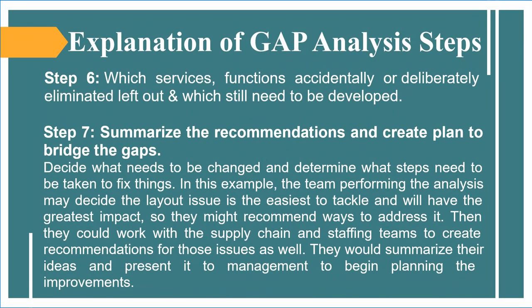Step 6 — Identify which services or functions were accidentally or deliberately eliminated, left out, and which still need to be developed. Step 7 — Summarize the recommendations and create a plan to bridge the gaps. Decide what needs to be changed and what steps need to be taken. In this example, the team may decide the layout issue is the easiest to tackle and will have the greatest impact, so they might recommend ways to address it, then work with supply chain and staffing teams for those issues as well. They would summarize their ideas and present them to management to begin planning the improvements.